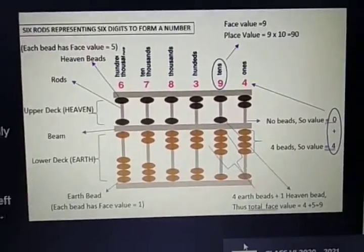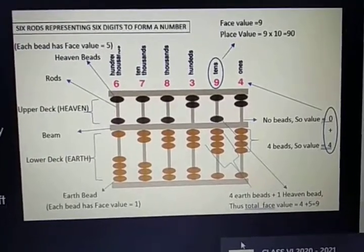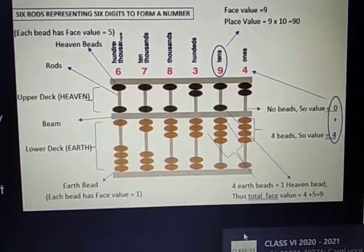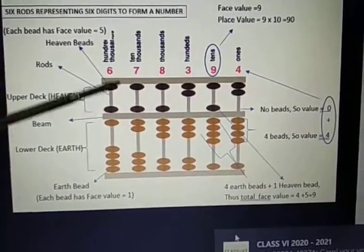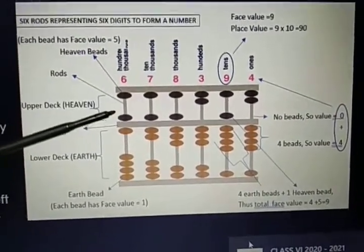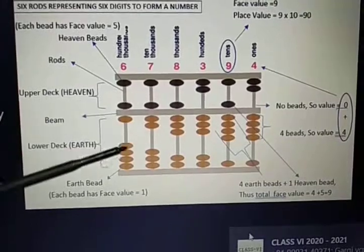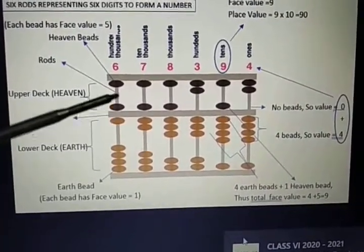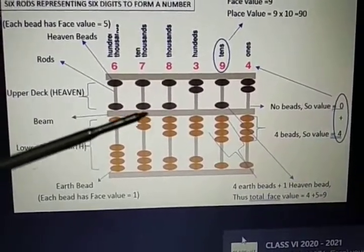This abacus represents a six-digit number. The upper portion is called heaven and the below portion is called earth. These are beads.